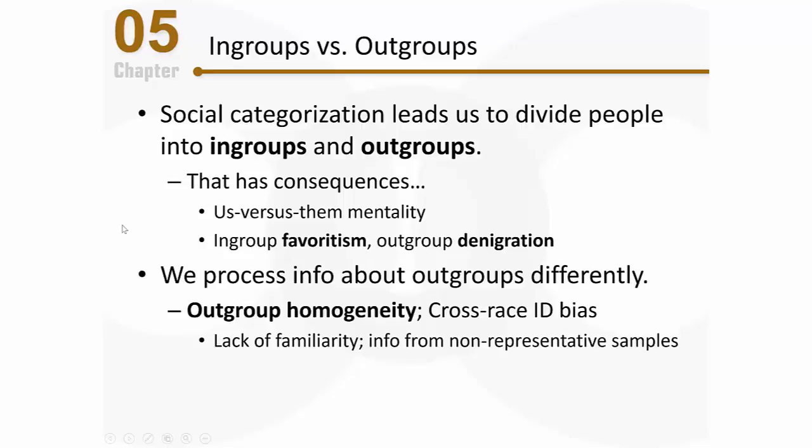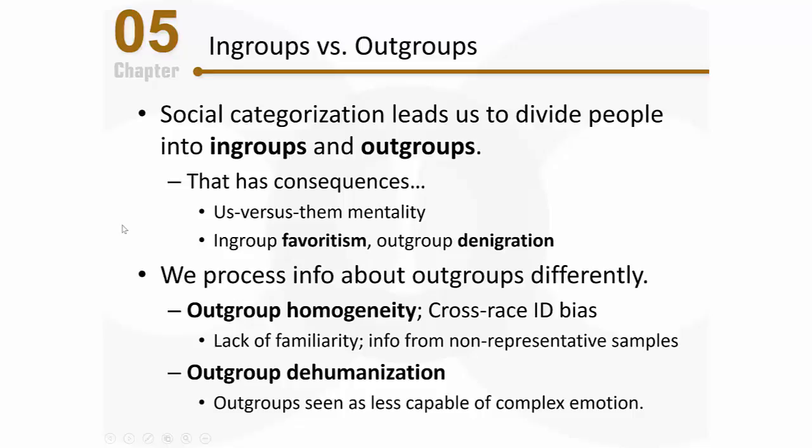The social categorization process also influences how we process information about out-groups in another way: it can lead to out-group dehumanization. People often see out-groups as being less capable of complex human emotion — things we see as uniquely human, like love, remorse, and mourning. The instructor admits to experiencing this personally: when watching news coverage of bombings on the other side of the world and seeing mothers and wives crying, there's a natural tendency to find it surprising that they show the same emotions — which reveals our natural tendency to see out-groups as less capable. In extreme situations, out-groups can be seen as simply less human, with their lives less valued overall.